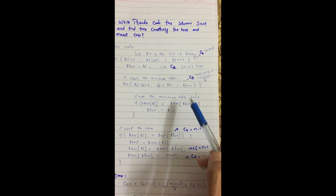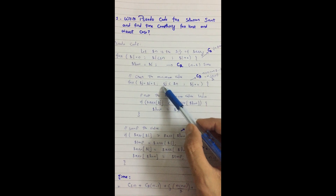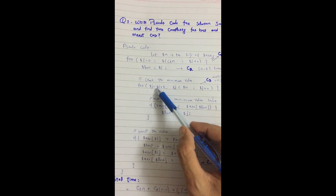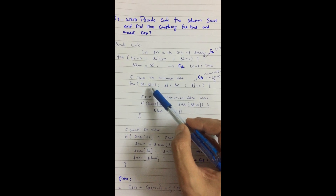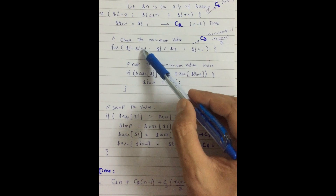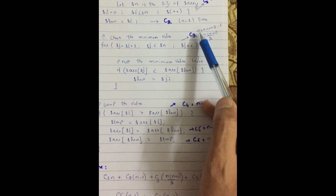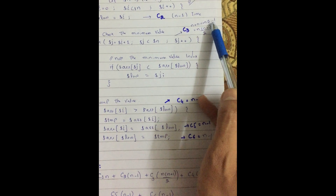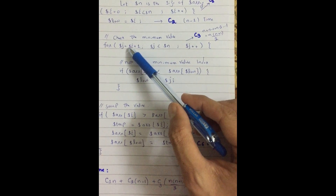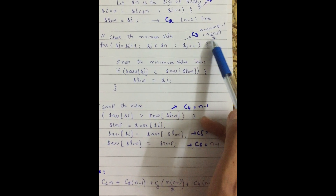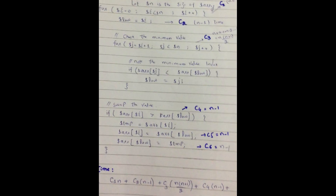The inner for loop runs a varying number of times: when i=0 it runs n times, when i=1 it runs n-1 times, when i=2 it runs n-2 times, and so on down to 1. This series is n + (n-1) + (n-2) + ... + 1, which equals n(n+1)/2. So the time for the inner loop is c3 × n(n+1)/2.